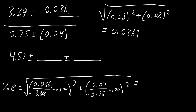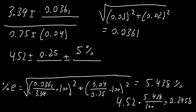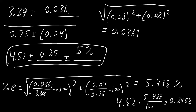What we get is 5.438%, so we say plus or minus 5% for our percent relative uncertainty. Next we get the absolute uncertainty: we take 4.52, multiply by 5.438, divide by 100, and we get 0.2458, so we say plus or minus 0.25. This is the absolute uncertainty and 5% is the percent relative uncertainty. That's all we need to do for a problem that involves subtraction and division.